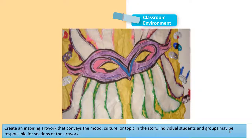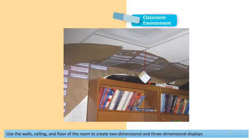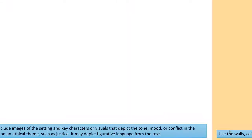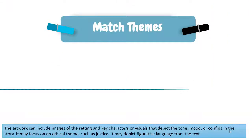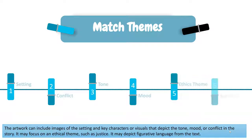Individual students and groups may be responsible for sections of the artwork. Use the walls, ceiling, and floor of the room to create two-dimensional and three-dimensional displays. The artwork can include images of the setting and key characters, or visuals that depict the tone, mood, or conflict in the story. It may focus on an ethical theme, such as justice.